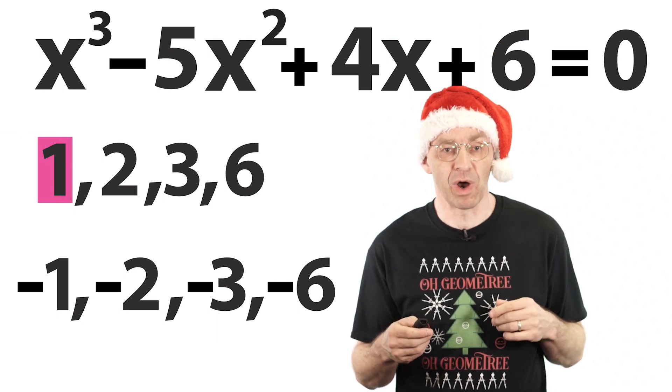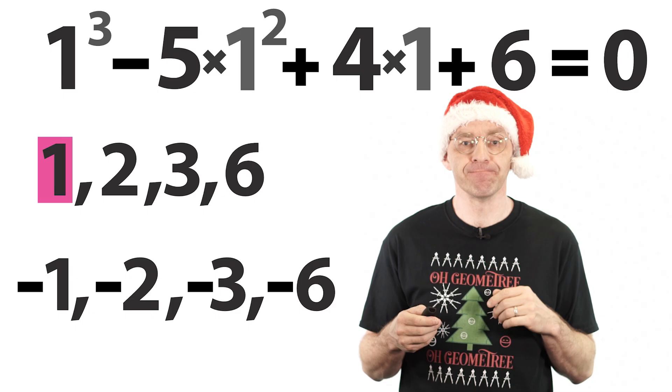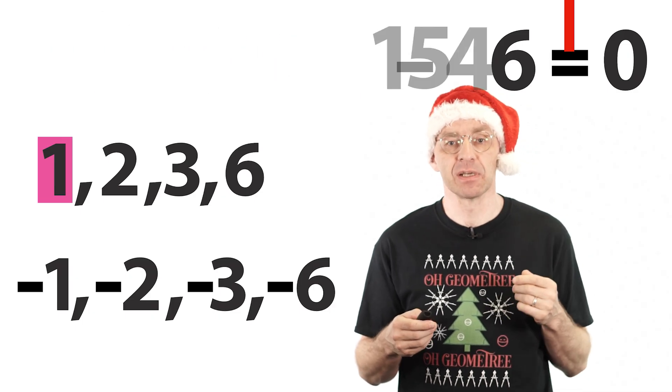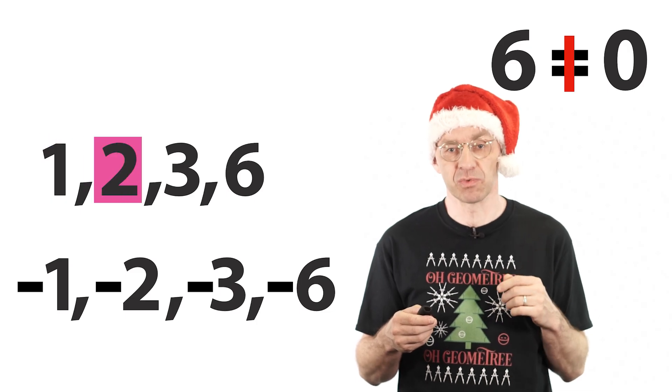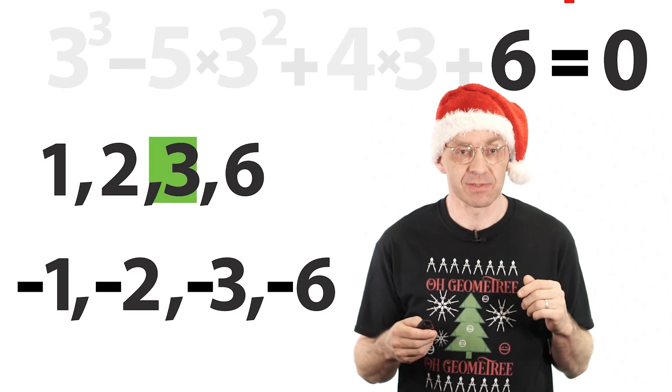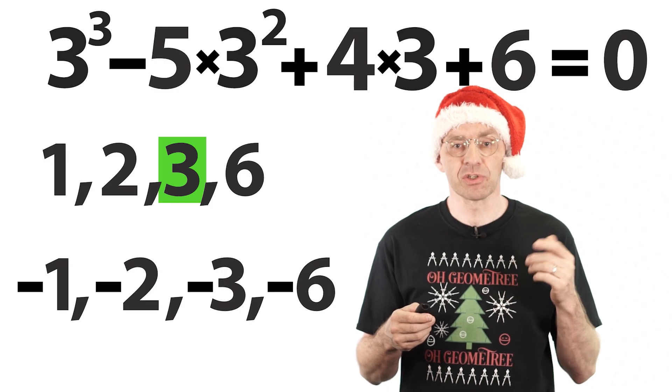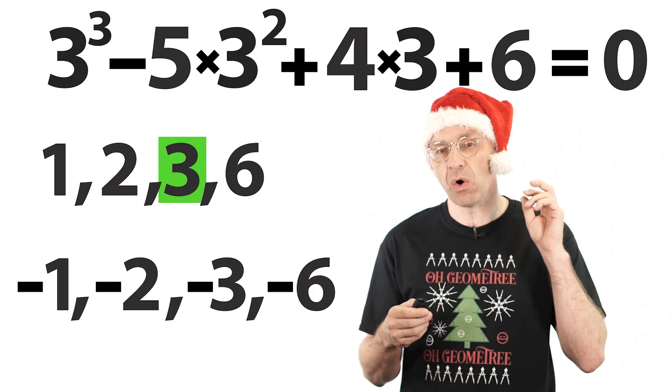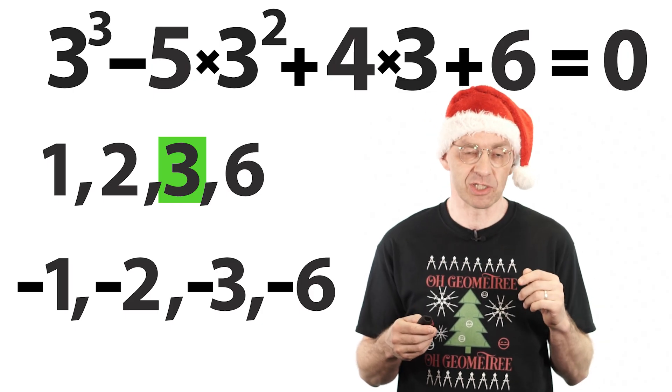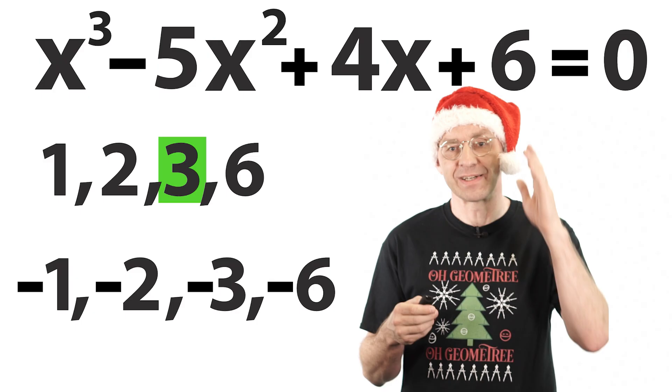So, if this equation has an integer solution, it's got to be one of these eight numbers. So, you cross your fingers, hope that your teacher or your mathologer has cooked up things correctly, and you start going through them. Let's start with 1. That didn't work out. And you can check that 2 also doesn't work, but we're lucky, 3 does. You can also check that none of the other integer candidates work, which means that 3 is the only integer solution to this equation.